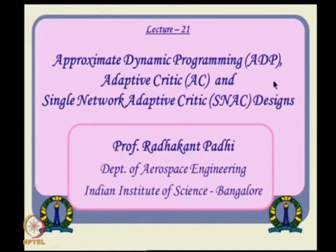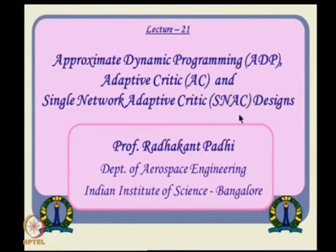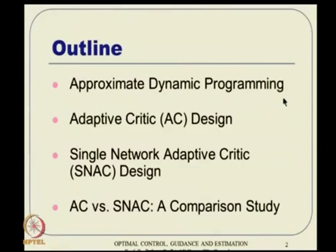There are ideas to avoid that and get some meaningful solutions at least for a limited class of problems. In this particular lecture we will see one approach called approximate dynamic programming, where we will see a fusion between the ideas of calculus of variations and dynamic programming. Following that we will use those results in a method called adaptive critic, and a variation called single network adaptive critic.